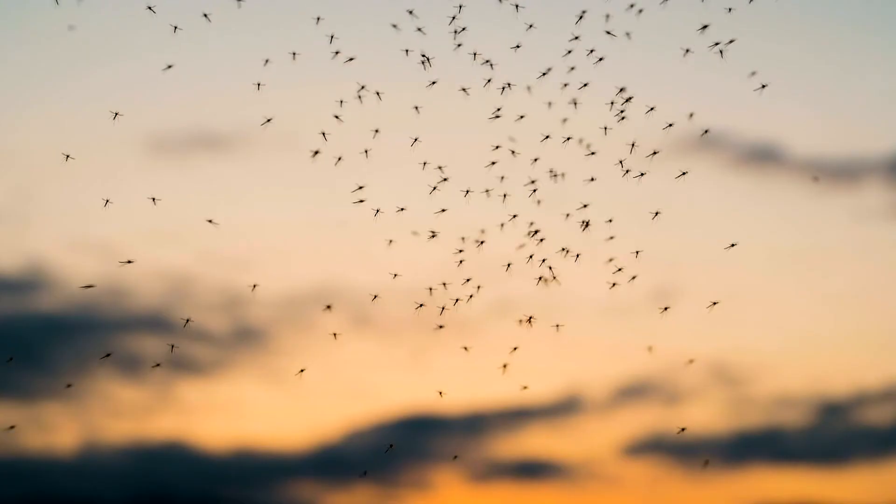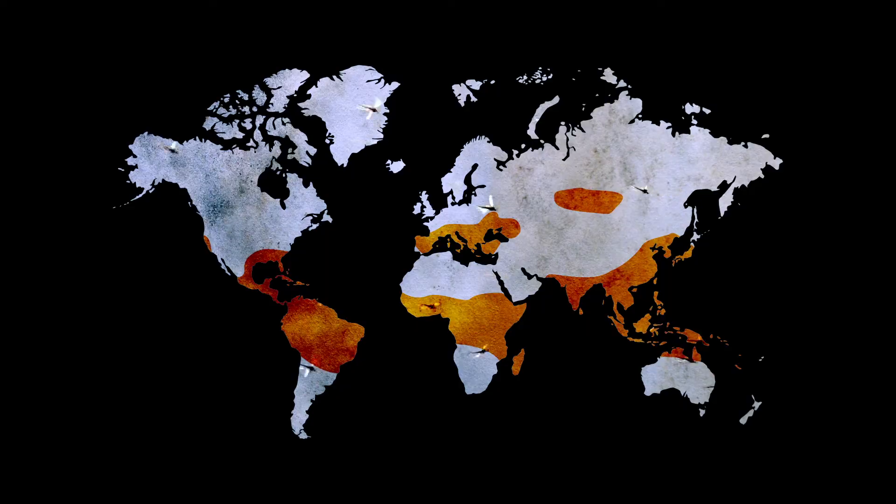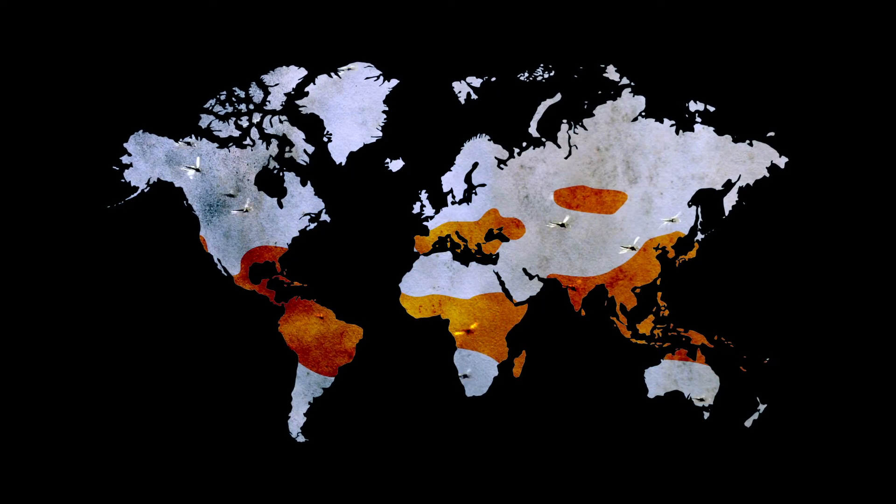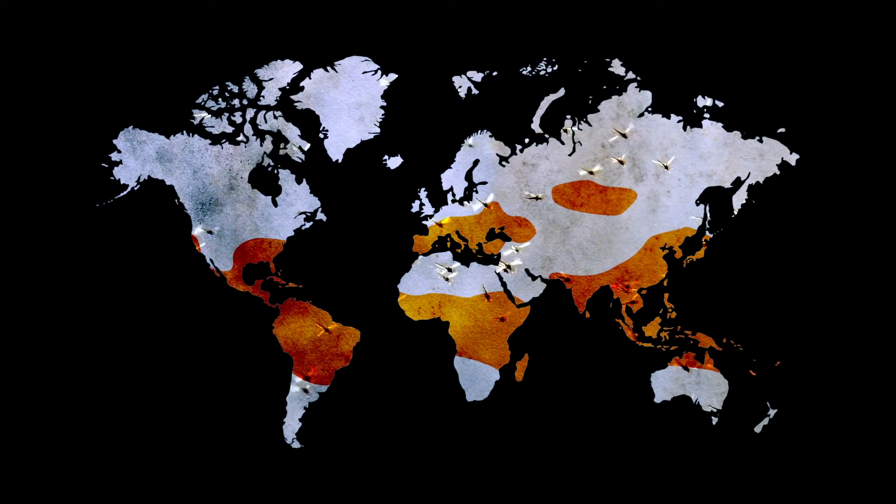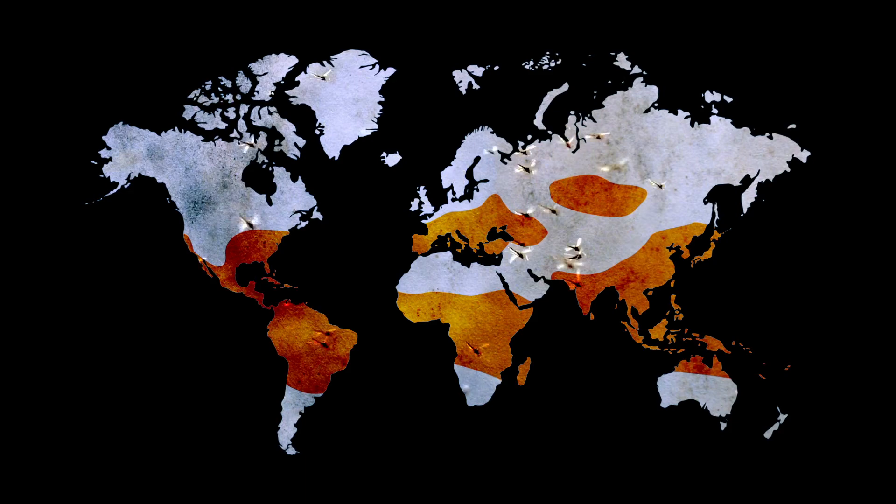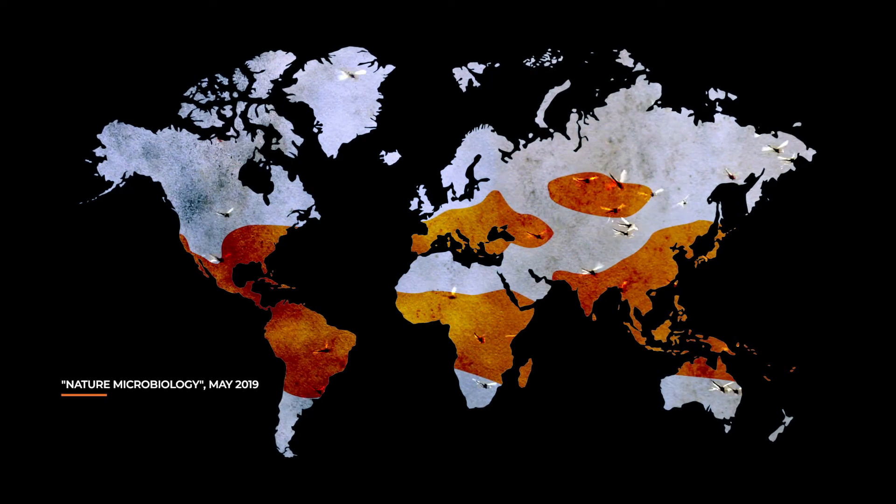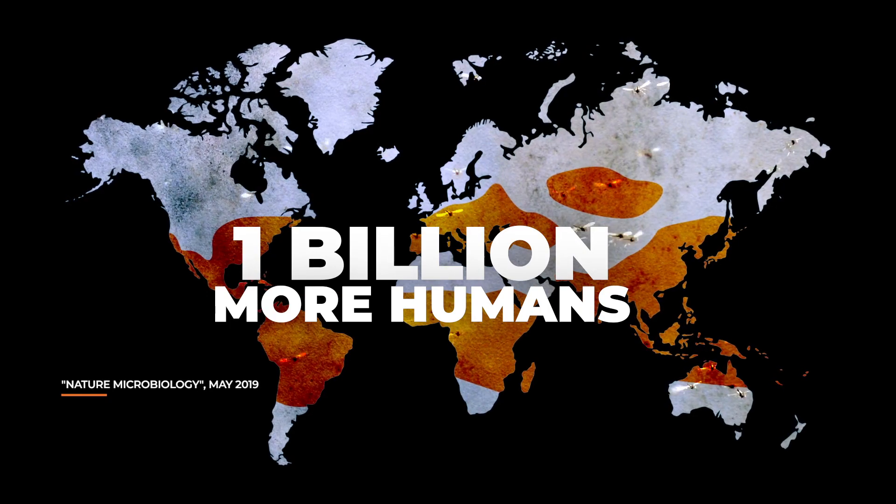This extra heat doesn't only affect frozen organisms. There are other microbes already awake waiting to spread. As cold regions heat up, they become new habitats for disease-carrying vectors like mosquitoes, fleas, and ticks. And longer summers provide them with an extended breeding season. By the end of the 21st century, these insects are projected to carry killer microbes to around 1 billion more humans.